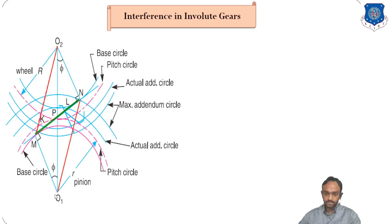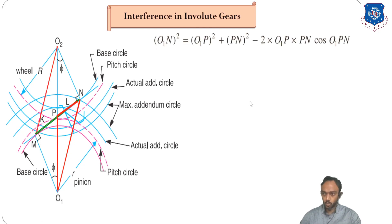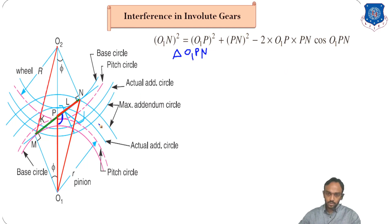To find O1N, I am going to use a geometrical relation. For triangle O1PN, we can say: O1N² = O1P² + PN² − 2·O1P·PN·cos(∠O1PN). This comes from the cosine rule applied to triangle O1PN. Now we need to find what this angle ∠O1PN is. First, check this geometry — if this angle is φ (the pressure angle), then this adjacent angle is 90°.